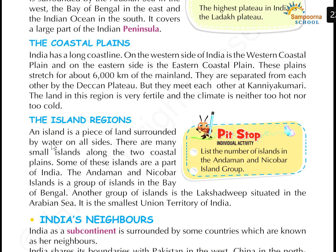Island regions — what is an island first of all? An island is a piece of land surrounded by water on all sides, which is covered by water.